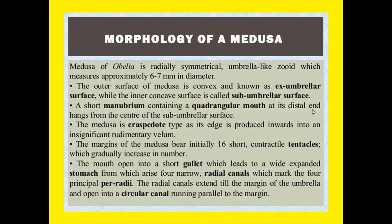Morphology of a medusa: the medusa of Obelia is a radially symmetrical, umbrella-like zooid measuring approximately six to seven millimeters in diameter. The outer convex surface is known as the exumbrella surface, while the inner concave surface is called the subumbrella surface. A short manubrium containing a quadrangular mouth at its distal end hangs from the center of the subumbrella surface.